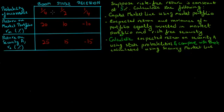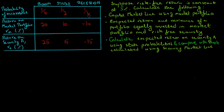The matrix here shows three possible economic scenarios: boom, stable, and recession. The probability of boom is 1/4 or 25%, and in that scenario the return on the market portfolio will be 20% and the return on security A will be 25%. The probability of stable is 1/2 or 50%, with market portfolio return of 10% and security A return of 15%. The probability of recession is 1/4 or 25%, with market portfolio return of negative 10% and security A return of negative 15%. The risk-free rate of return is constant at 5%.